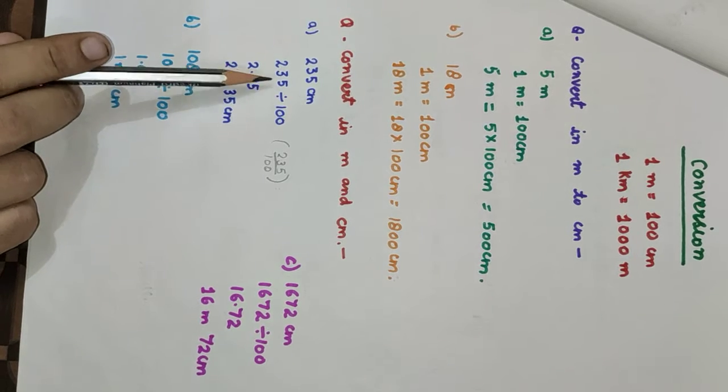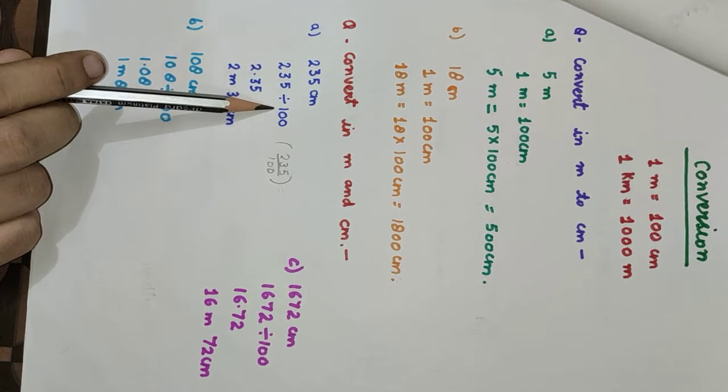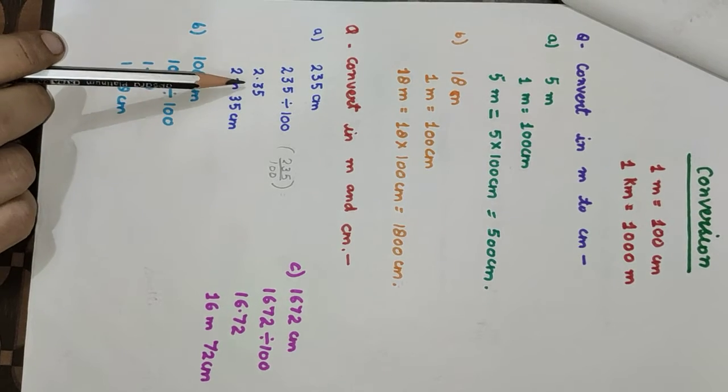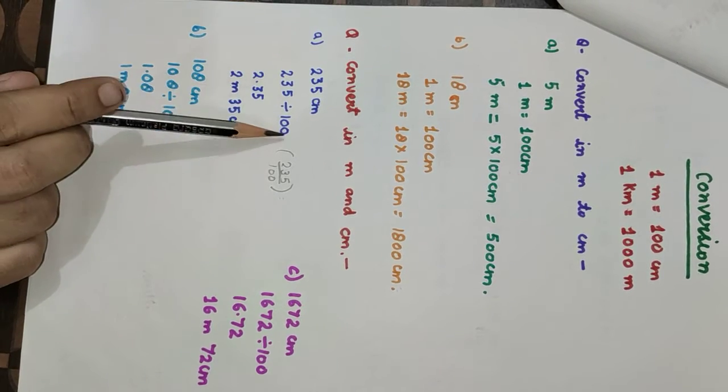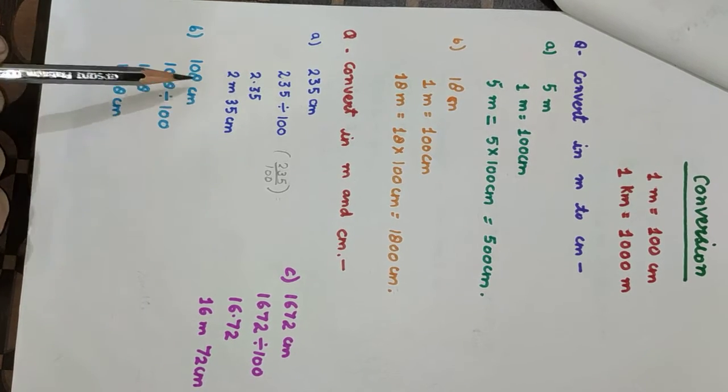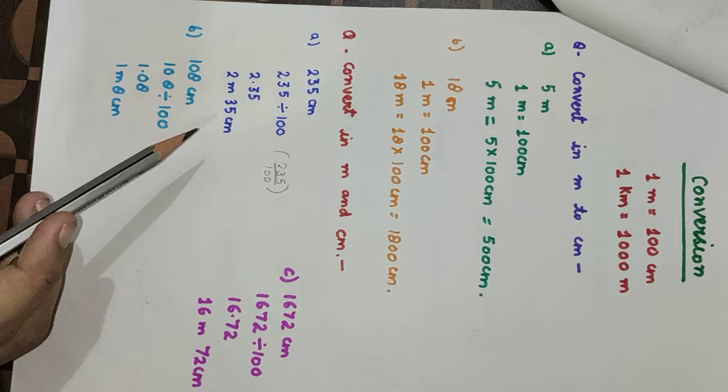For centimeters to meters, we divide by 100. If we divide 235 by 100, we put the decimal here. The answer is 2 meters, 35 centimeters.